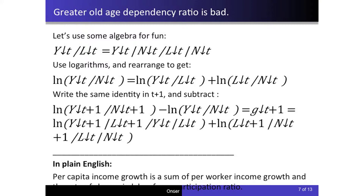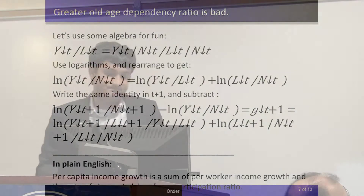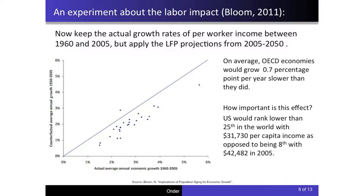Rewriting this equation for the following year and subtracting gives: the growth rate in income per capita equals the growth rate in labor productivity plus the change in the labor force participation rate. This means that if you are very productive you will have more income, but the labor force participation rate also affects how much income there is to spend.